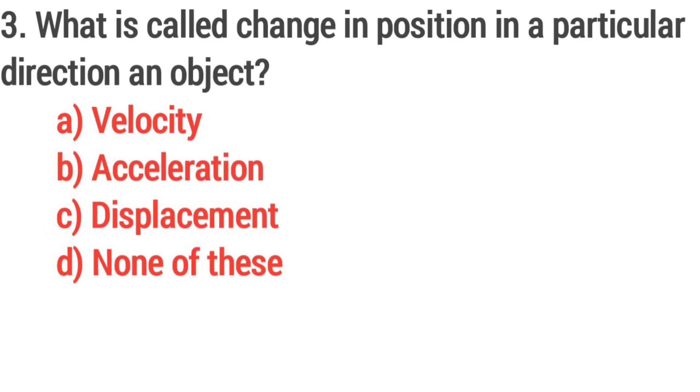Question 3. What is called sensing position in a particular direction an object? Option C, Displacement.